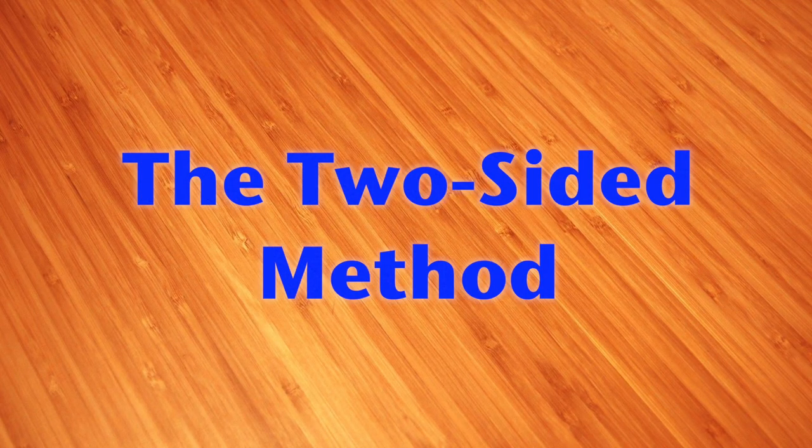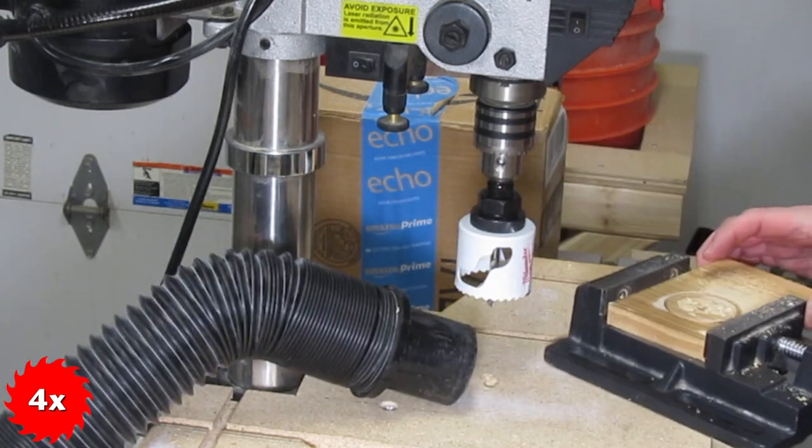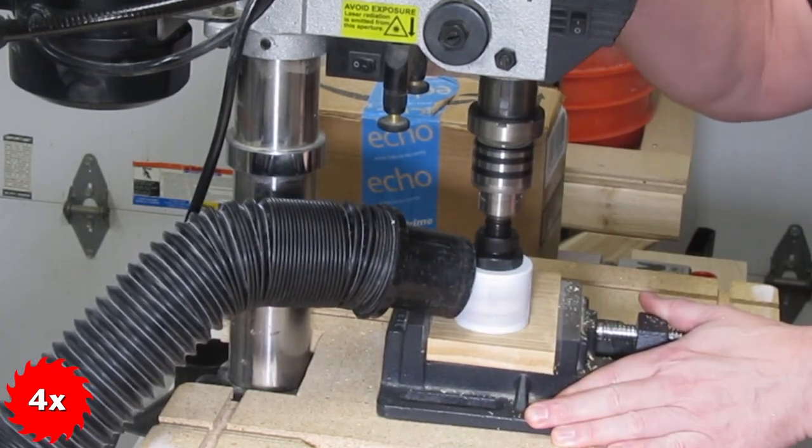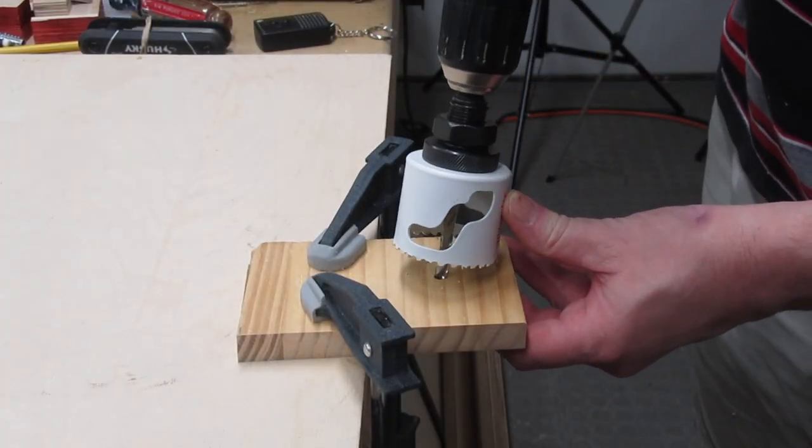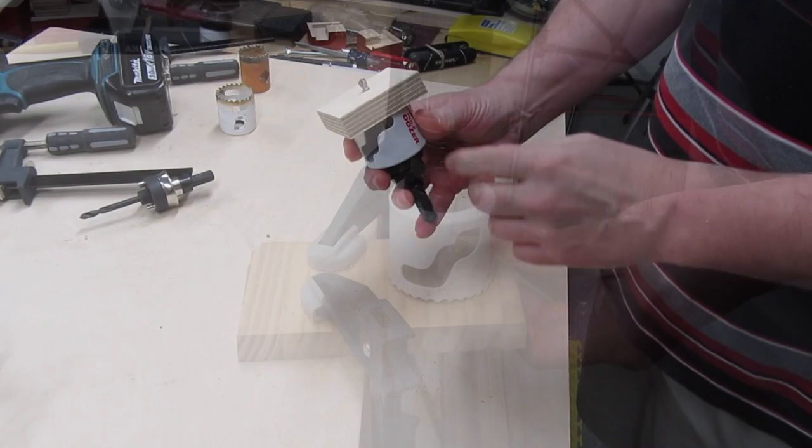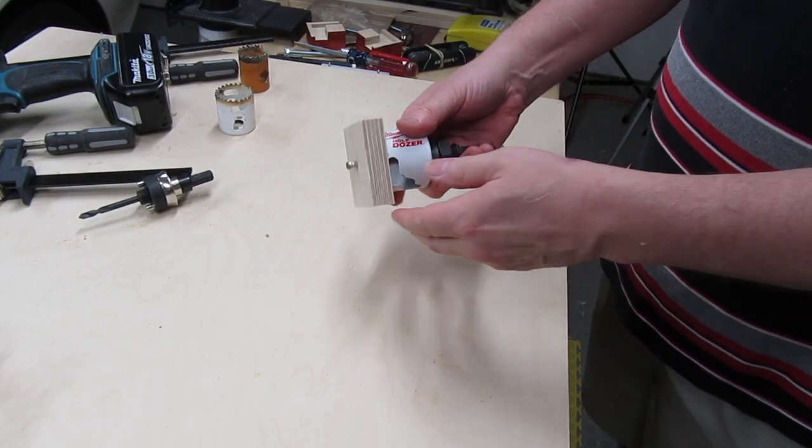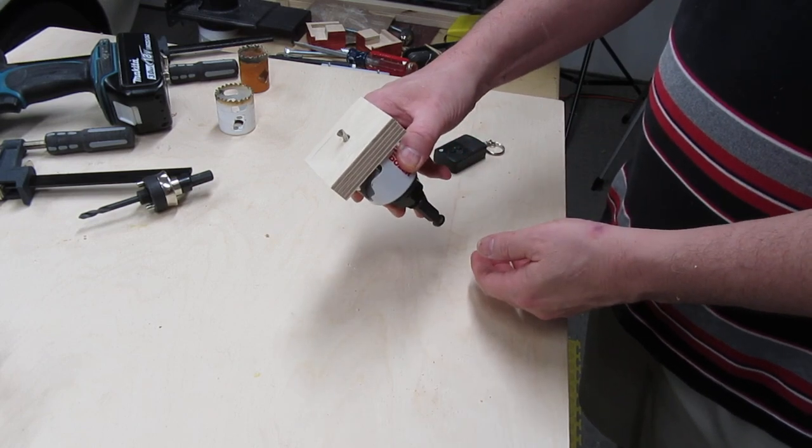Now let's talk about the two-sided method. As I mentioned before, drill part way through from one side, then flip it over and finish from the other side. You can use the hole that the pilot bit creates to align the saw. This is why I said the pilot bit should extend at least a half inch, if not more, past the teeth of the hole saw, so it pokes a hole through the stock, even though you've only drilled part way through.